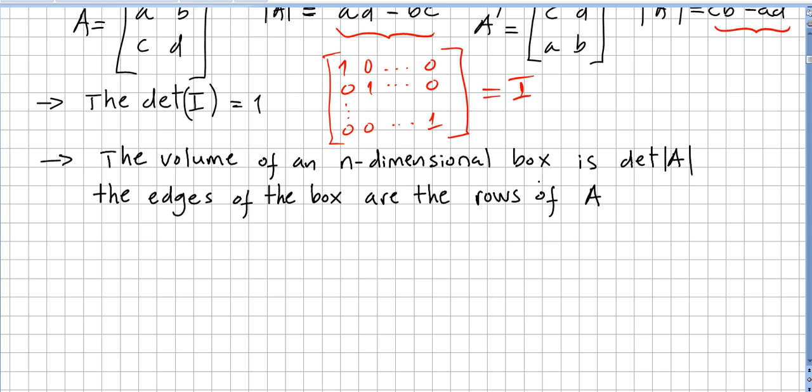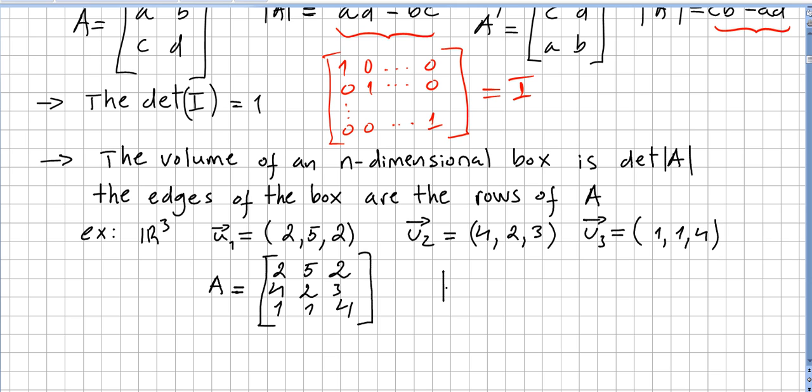So the volume of an n-dimensional box is the determinant of A, where the edges of the box are the rows of A. Let us see an example in R³. We have vectors u₁ = (2, 5, 2), so the sides will be these vectors: (2, 5, 2), (4, 2, 3), and (1, 1, 4). So we put this in a matrix: [2, 5, 2; 4, 2, 3; 1, 1, 4].